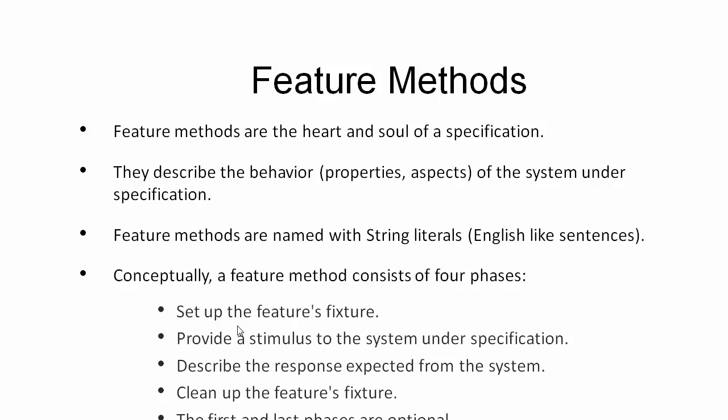A feature method is going to have various components: it normally uses a setup fixture for the specific feature method, it provides the action that we need to perform, and it handles whatever response is expected from the system under test. Once all the tests are performed, it cleans up all the objects and associated resources.